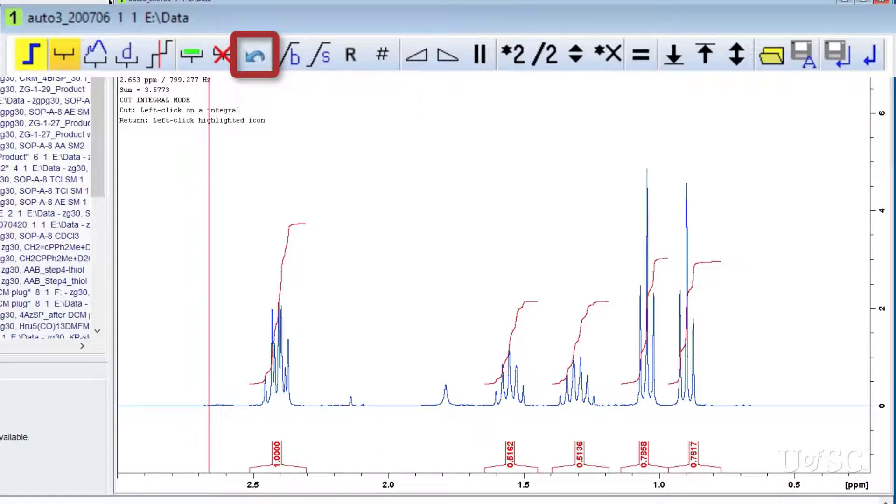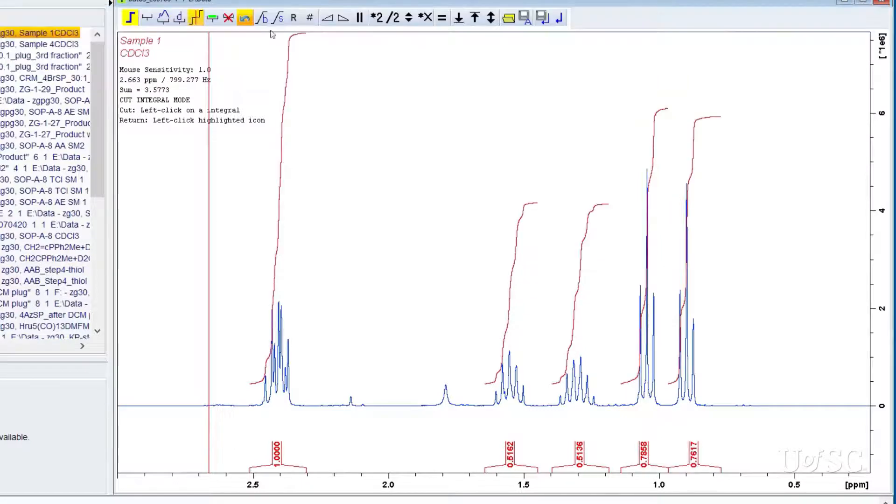When you are happy with the regions you created, you can now define the values of the regions. Notice that when you create regions from scratch, the first region is set to 1. To define a region to a set value, move the red cursor onto that region and click the right mouse button.